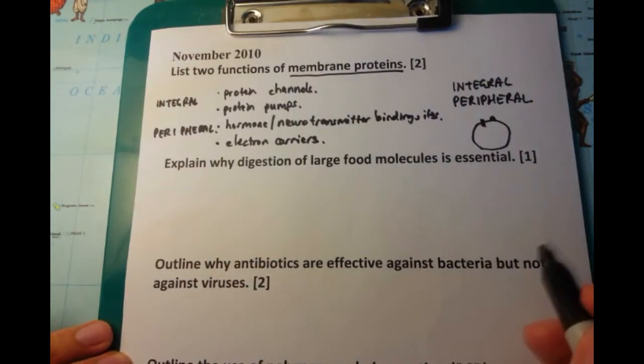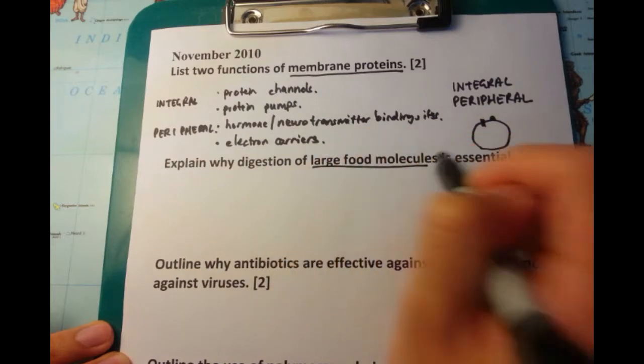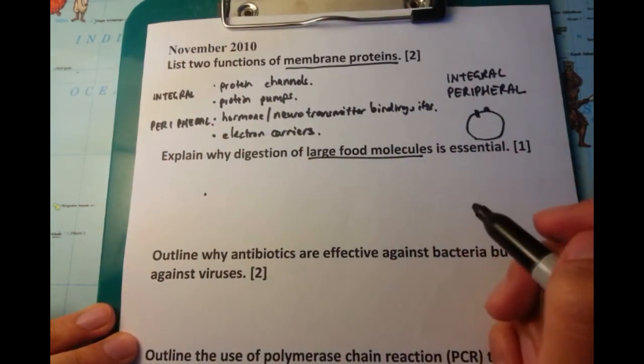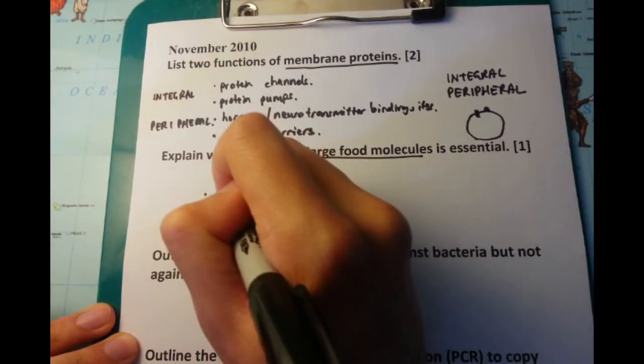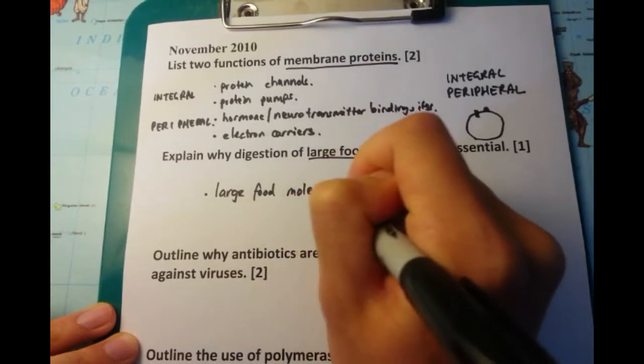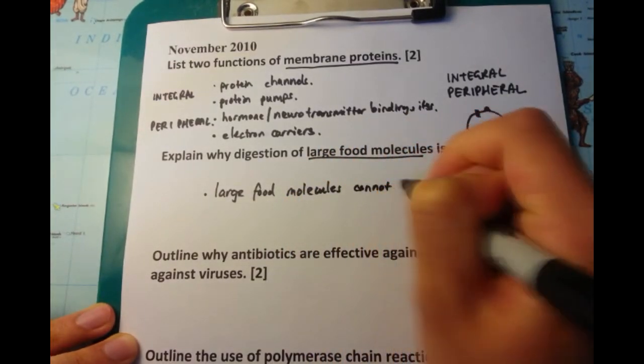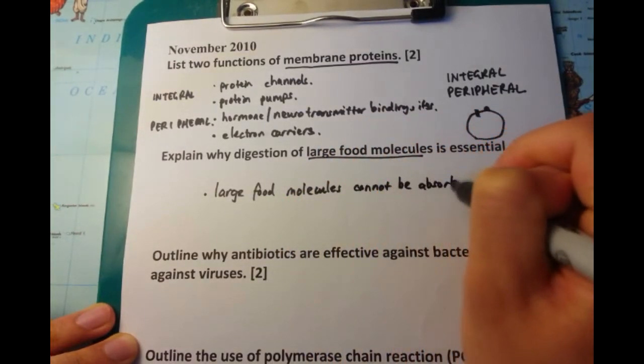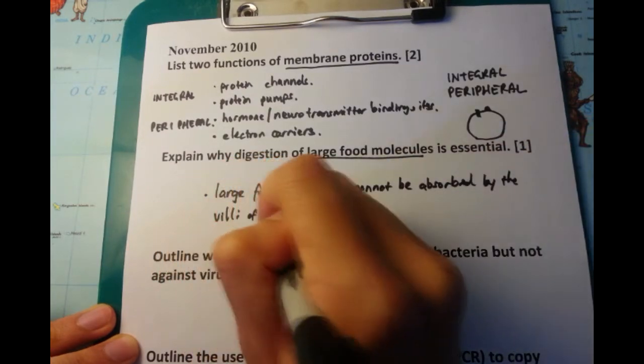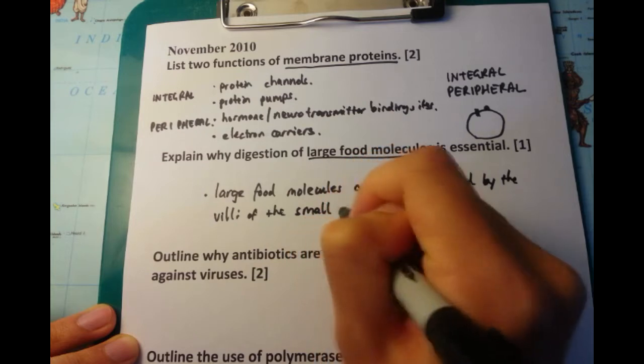Now let's explain why the digestion of large food molecules is essential. Pretty easy. Large food molecules, they're too large to be absorbed by the villi of the small intestine. They need to be broken down by chemical as well as physical breakdown into something smaller that can be absorbed into the villi and into the bloodstream.